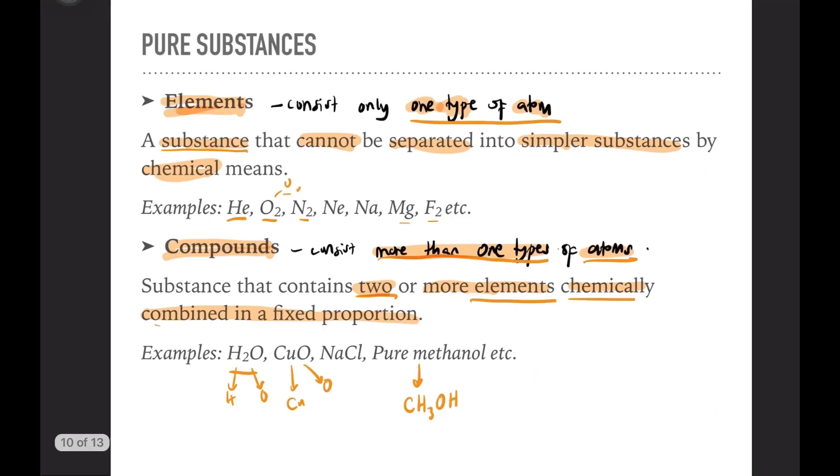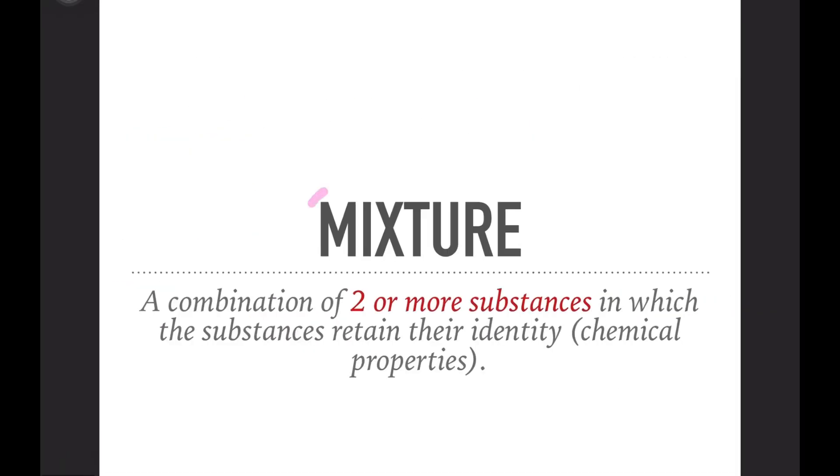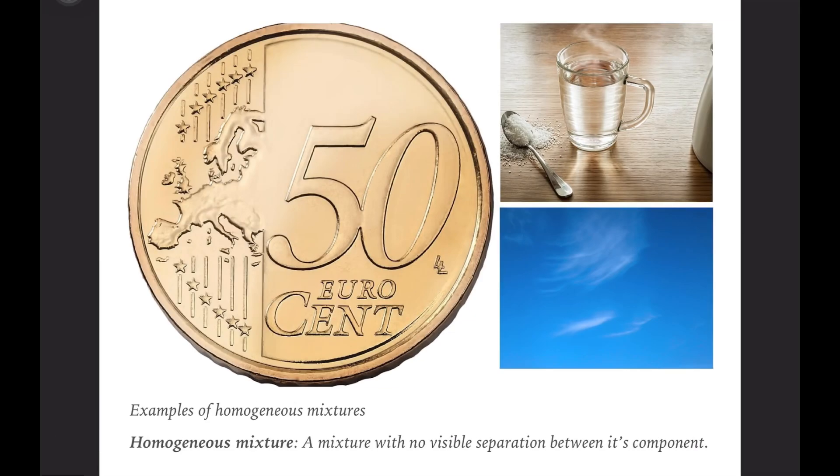Now, let's have a look at mixtures. Mixture is a combination of two or more substances in which the substances retain their chemical properties or chemical identity. We have two types: homogeneous mixture and heterogeneous.